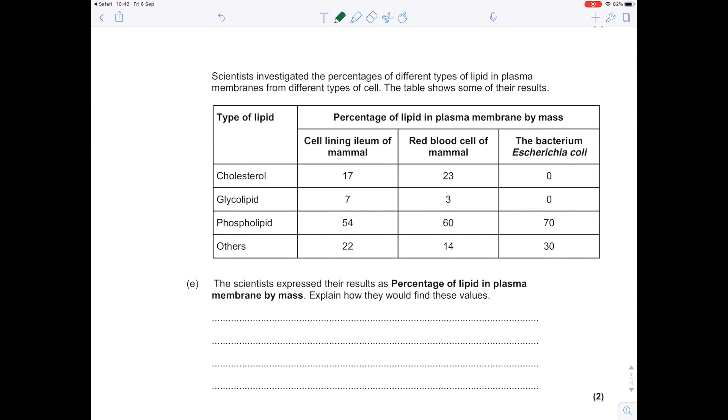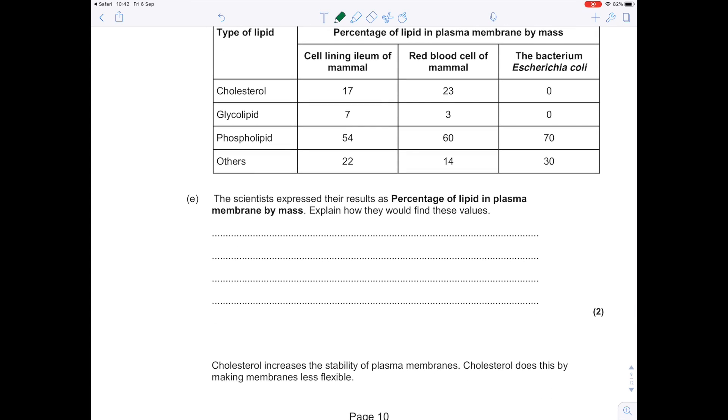Scientists investigated the percentages of different types of lipid in plasma membranes from different types of cell. The scientists expressed their results as percentage of lipid in plasma membrane by mass. Explain how they would find these values. This is a weird question. It's effectively asking you to write out in words how you'd calculate percentage mass. You do the mass of each lipid divided by total mass of lipids. And then, because it's a percentage, we need to multiply by 100.